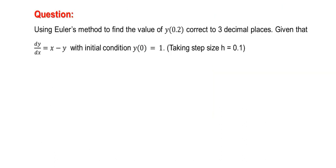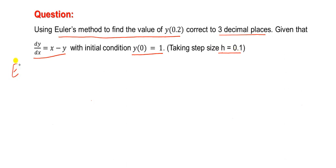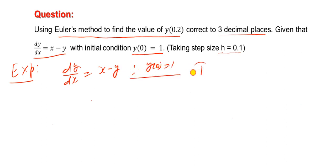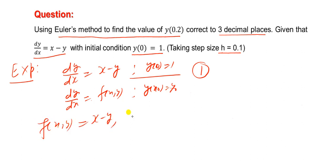Now the second problem related to Euler's method. Using Euler's method, find the value of y at x = 0.2, correct to three decimal places, given that dy/dx = x - y with initial condition y(0) = 1 and step size h = 0.1. The given initial value problem is dy/dx = x - y with y(0) = 1. Comparing with the standard form, we obtain f(x, y) = x - y, x0 = 0, y0 = 1, and h = 0.1.